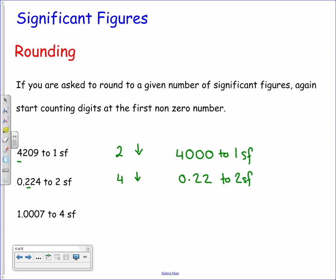The last number is 1.0007 and we want this to four significant figures. We start counting at the one and count four digits. We see it's followed by a seven — the seven tells us we need to round upwards, so the zero before it goes to a one, giving us 1.001.